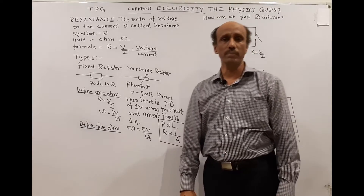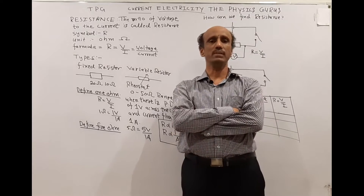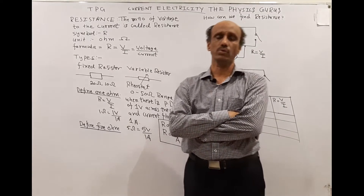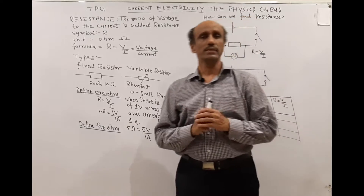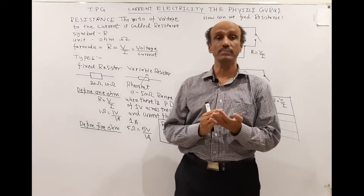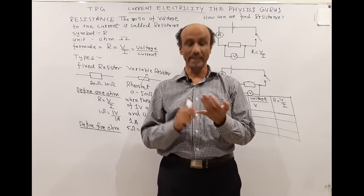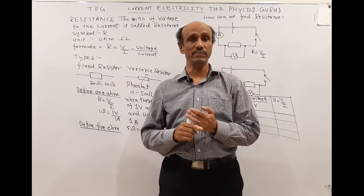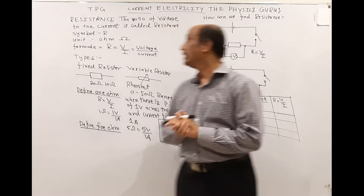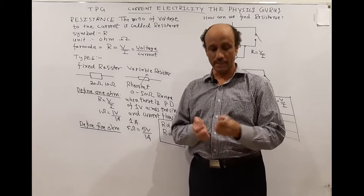Hello students, I am Mohammed Kamran Halil from YouTube channel TBG The Physics Gurus. Today we will discuss the O Levels topic 5054, current electricity. You already know the concept of current, the difference between conventional current and electron flow, and the difference between EMF and potential difference.